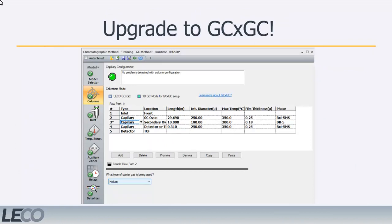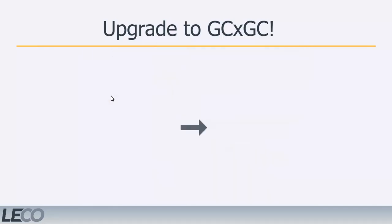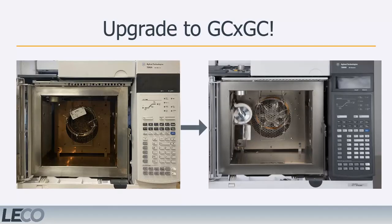Once a GC×GC system is installed, switching between 1D and GC×GC modes of data acquisition is as simple as checking a box in the method. Any Pegasus BT can be converted to a GC×GC system with the purchase of a GC×GC upgrade kit. For more detailed information, please reach out to your LECO sales representative.